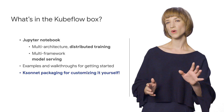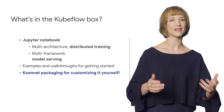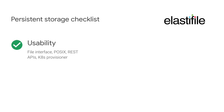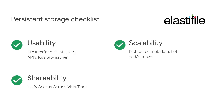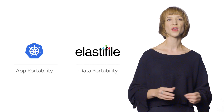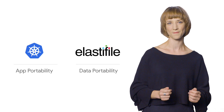But what about the data? App portability needs data portability. That's what Elastifile's for. It gives you one-click setup and straightforward sync strategies, all without having to rewrite your applications. If your app can use POSIX, NFS, or standard block object store, you can use Elastifile. So Elastifile plus Kubeflow means you have everything you need for truly portable machine learning.